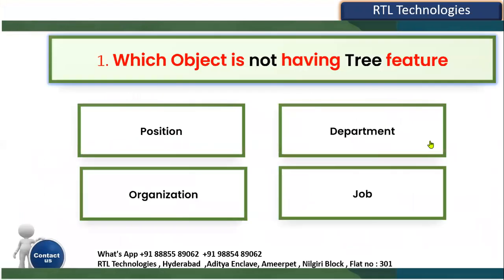The first question is: which object does not have a tree feature? We have four objects as options — Position, Department, Organization, or Job. In the Global HR module, there is a concept called trees. Which of these four objects does not have the tree feature?